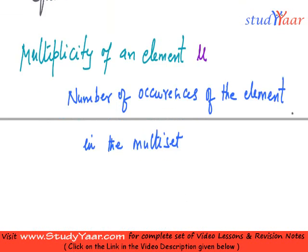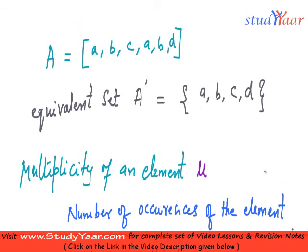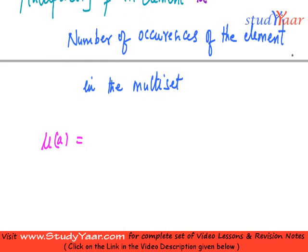Let us see. The multiplicity of a is equal to the number of times a has occurred in the multiset. So, a has occurred once and a has occurred twice. So, mu of a is 2.